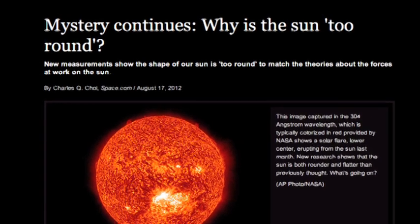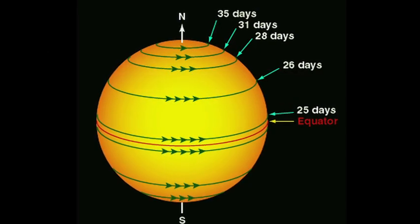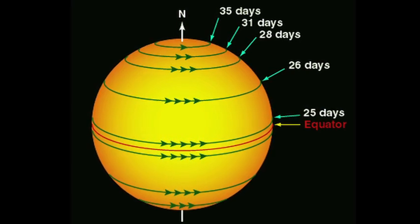Of course it's always been a problem for standard model as to why does the Sun rotate so much more rapidly at its equator than it does at its poles.